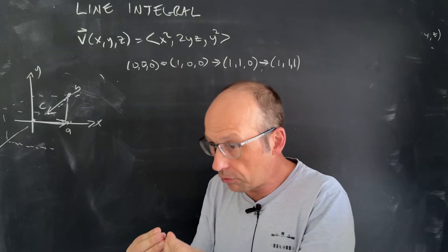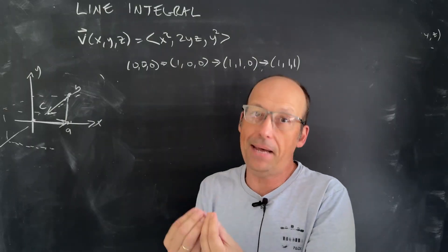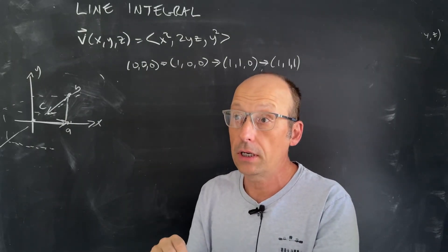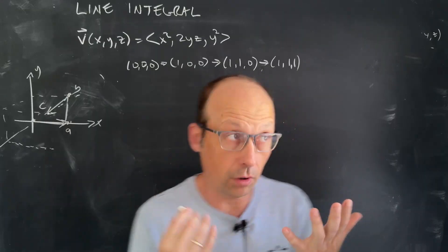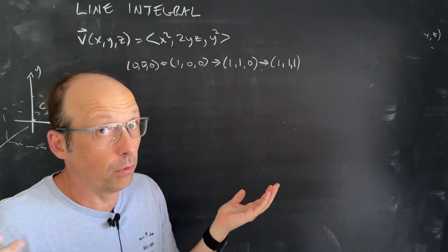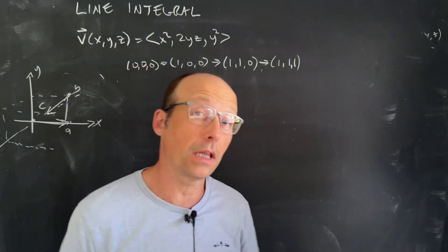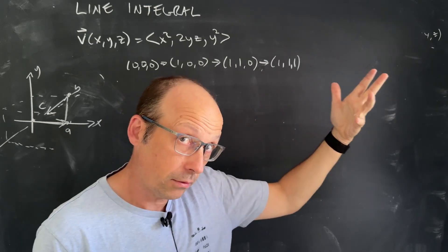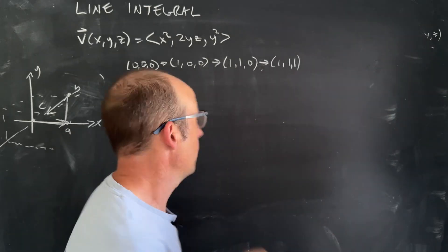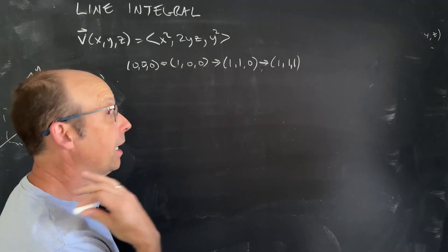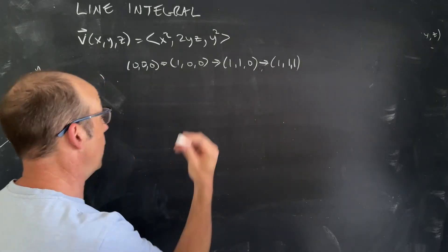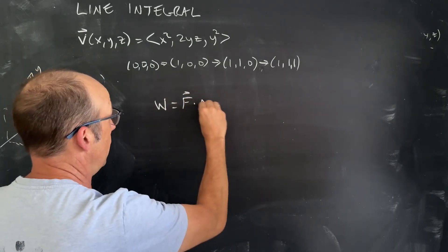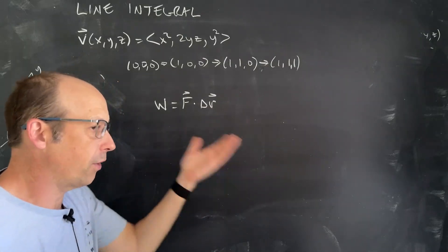So what is a line integral? I think the best version for you to think about is the definition of work, because that's really what we're going to use. We're going to deal with electric potential, and that comes from the work — that's where potentials come from. So if I have a constant force and a constant displacement, I can say the work is F dot delta r. We can do this for any function.